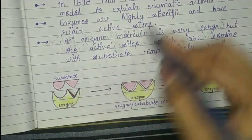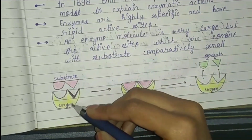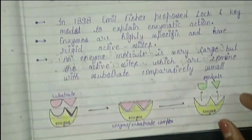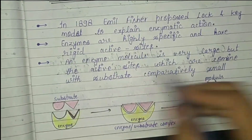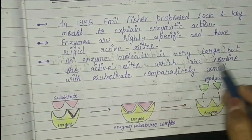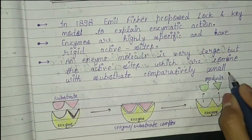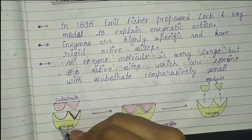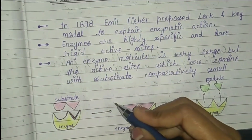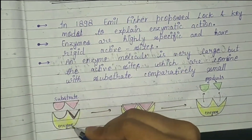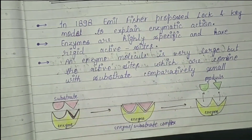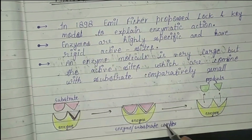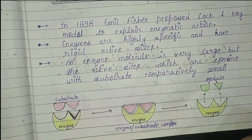Fisher said the enzyme is very rigid — it doesn't change its shape. An enzyme molecule is very large, but the active site which combines with the substrate is comparatively small. When the substrate binds to the enzyme, we get a new compound called the enzyme-substrate complex, and then we get the enzyme and the products separately.